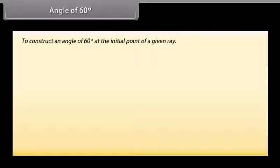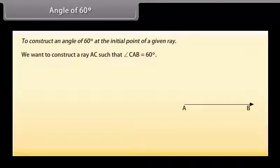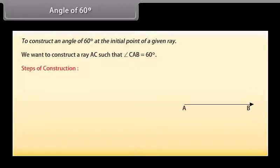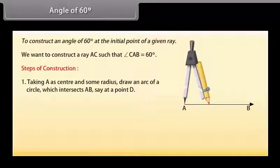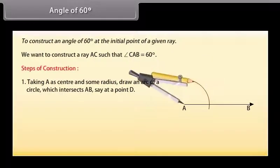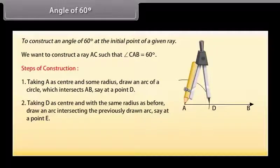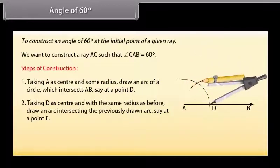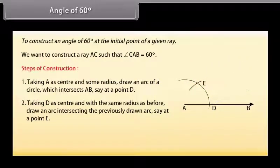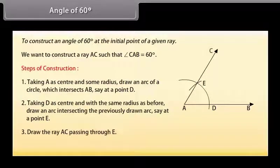We know how to construct 30 degree and 45 degree angles. Now we will learn to construct an angle of 60 degrees at the initial point of a given ray. Let us take a ray AB with initial point A. We want to construct a ray AC such that angle CAB is equal to 60 degrees. Taking A as center and some radius, draw an arc of a circle which intersects AB, say at a point D. Now taking D as center and with the same radius as before, draw an arc intersecting the previously drawn arc, say at a point E. Draw the ray AC passing through E. Then angle CAB is the required angle of 60 degrees.